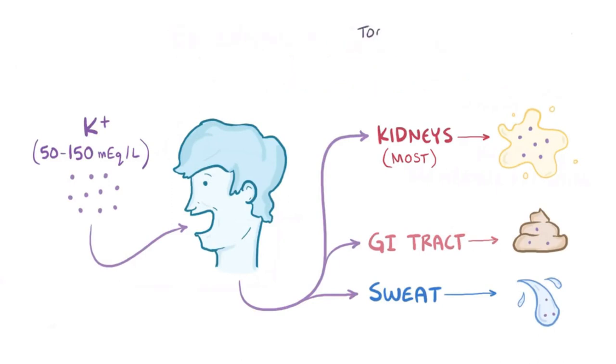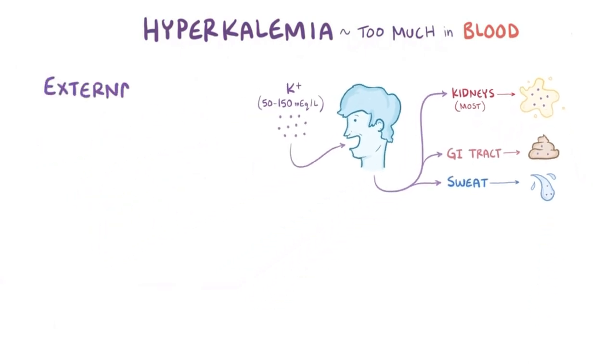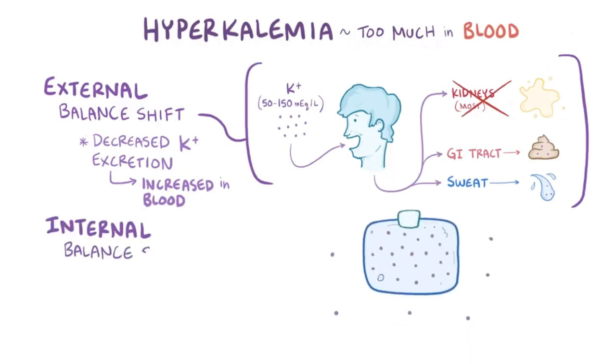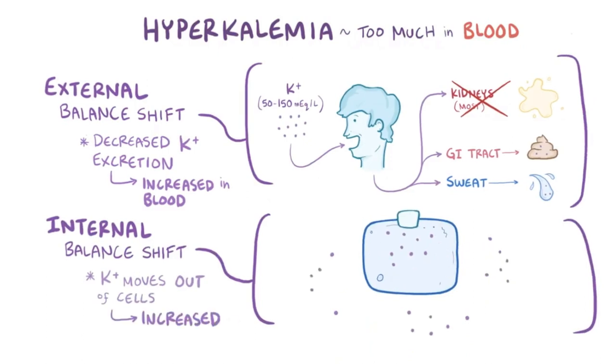So in order for there to be too much potassium in the blood, or hyperkalemia, there are two possibilities. The first is an external balance shift, which is most often caused by a decrease in potassium excretion in the kidneys, which raises the level of potassium in the blood. The second is an internal balance shift, where potassium moves out of cells and into the interstitium and blood.